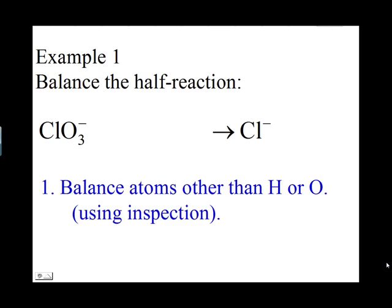Start by balancing atoms other than hydrogen or oxygen — in this case, chlorine atoms. There is one chlorine atom on both sides, so chlorine is already balanced.